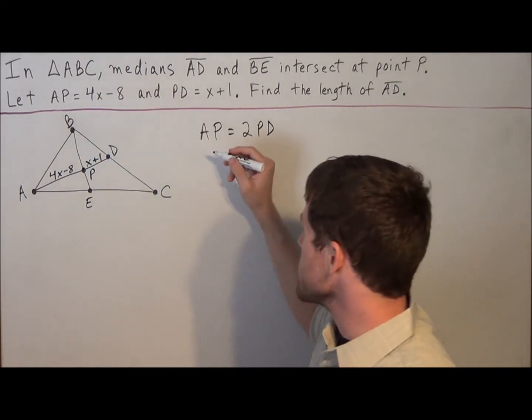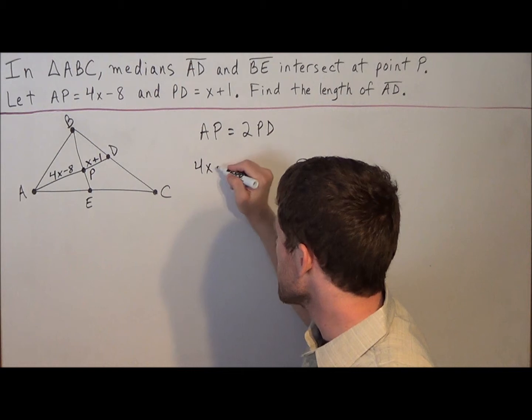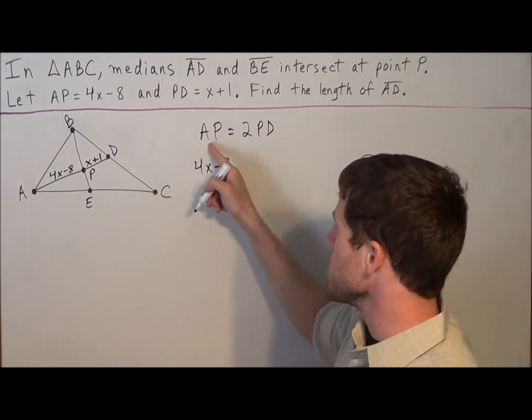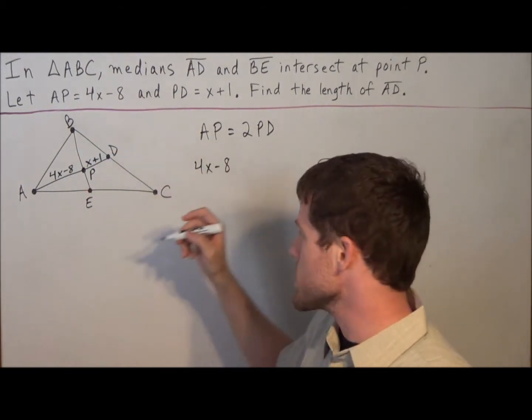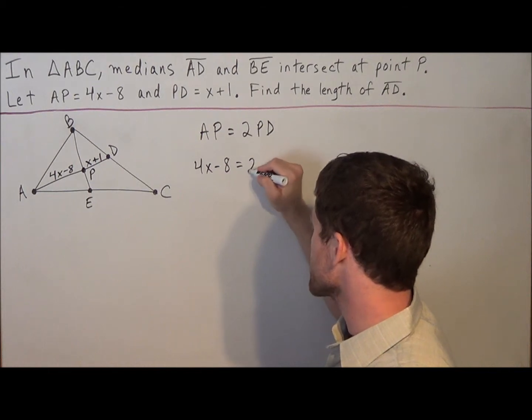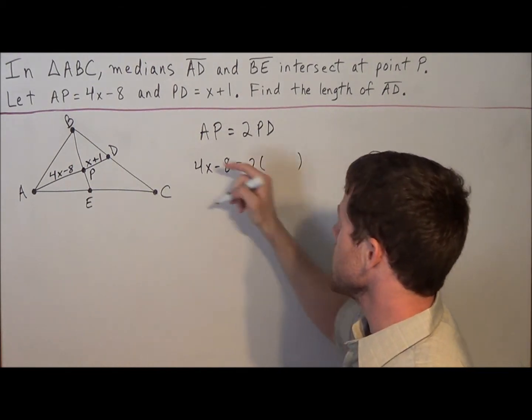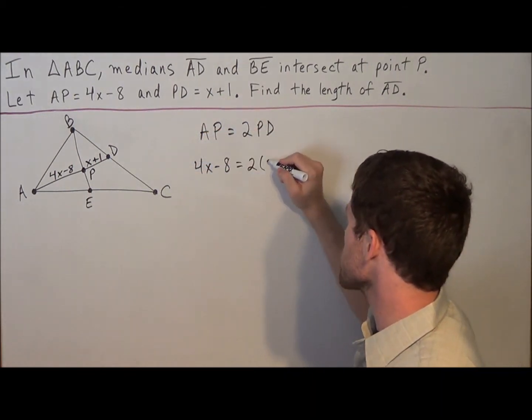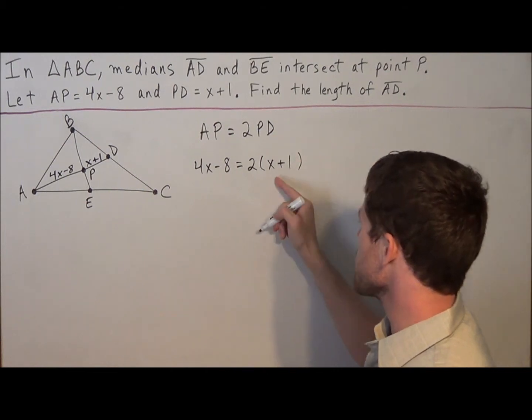We know that AP is equal to 4x minus 8. So on the left-hand side, instead of AP, we could replace that with 4x minus 8. And on the right-hand side, we have 2 times PD, but PD is equal to x plus 1. So we could replace PD with x plus 1.